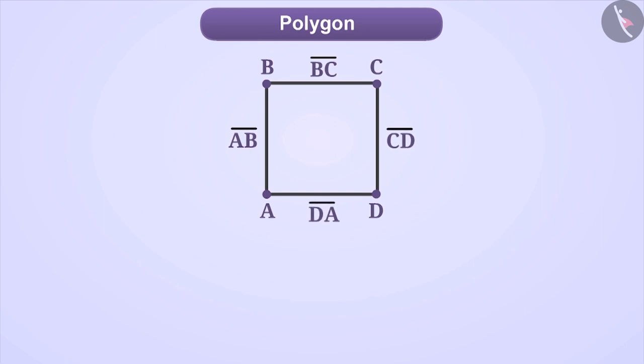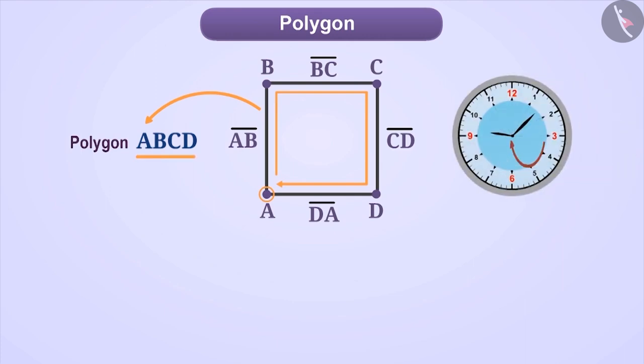We can name a polygon with the help of its vertices. Like here, we will name it as polygon ABCD. While naming a polygon, remember that we start from one point and move to the other subsequent point in an order on the boundary of the polygon. This order can be in either clockwise or anti-clockwise direction.